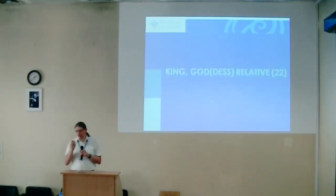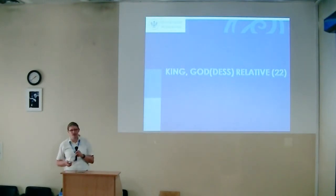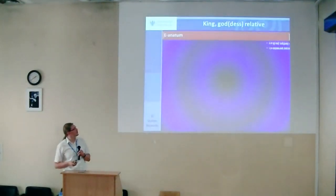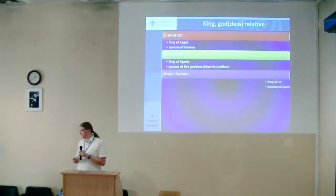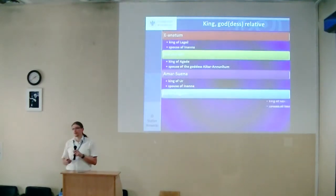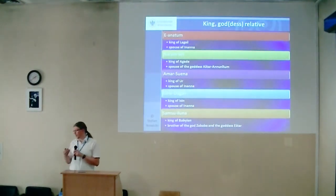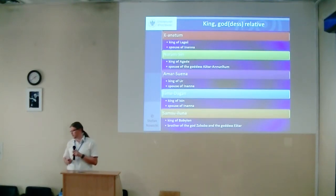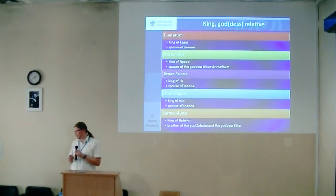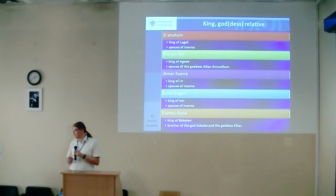We also find other relations between kings and deities — only 22 cases. Eannatum is spouse of Inanna. Naram-Sin is spouse of the goddess Ishtar-Annunitum. Amar-Suena, again, is spouse of Inanna. And Samsu-iluna is brother of the god Zababa and the goddess Ishtar.